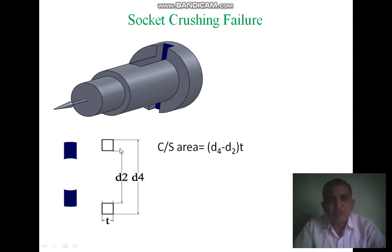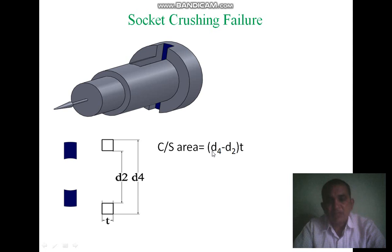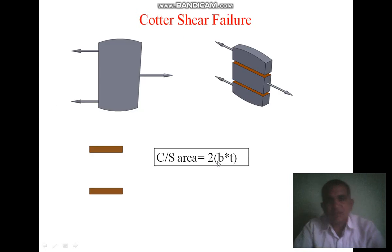Here D2 is the diameter of the spigot and D4 is the diameter of the socket collar. The cross-sectional area equals (D4 − D2) × t. In this way you can find out the crushing stress: sigma c equals force per unit area, so sigma c = P / [(D4 − D2) × t].